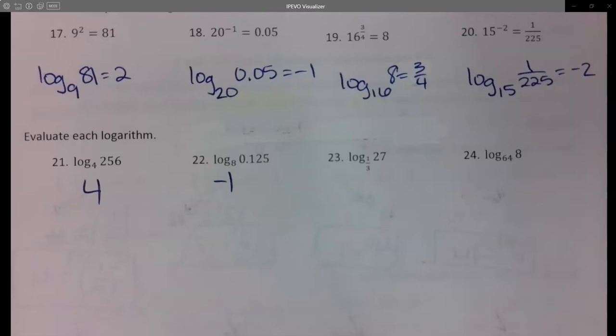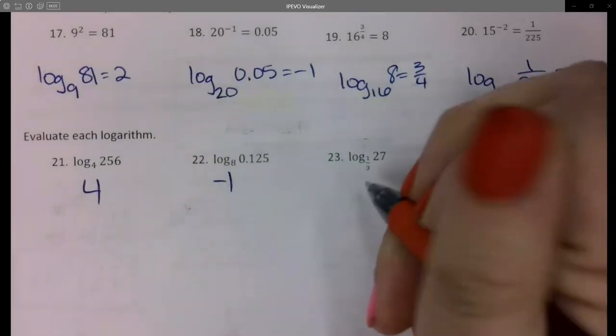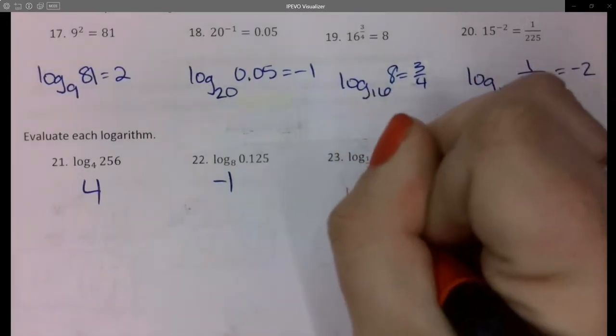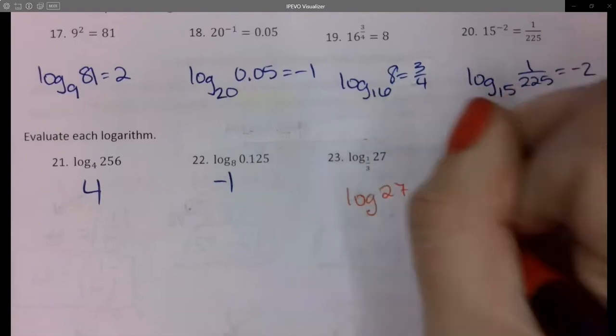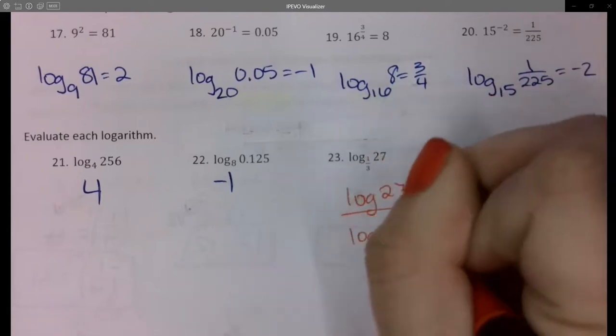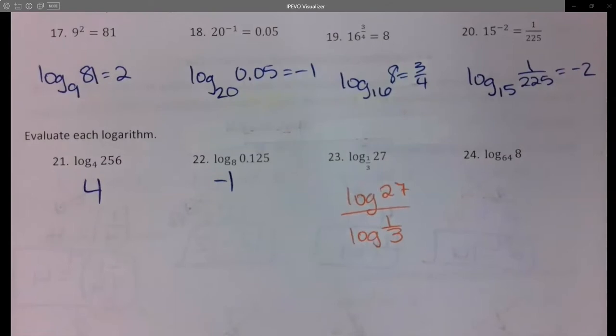I can type this one in Desmos a special way since 1/3 is repeating. I can do just log of 27 over log of 1/3 and it'll still give me the answer.